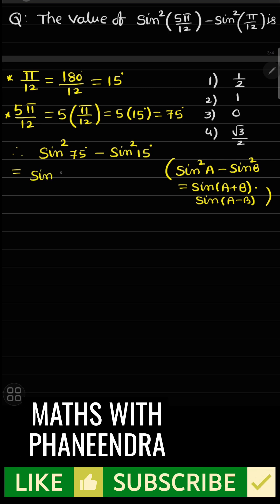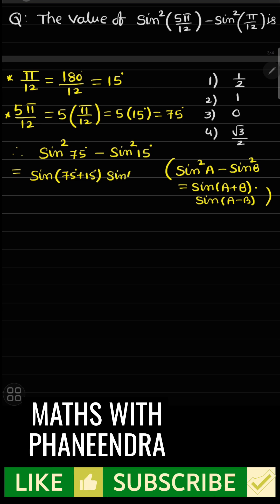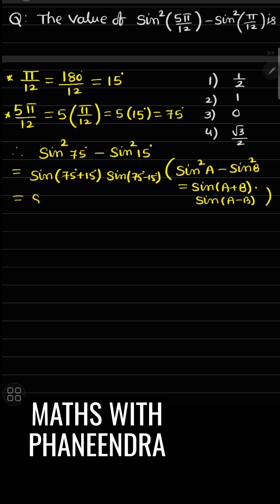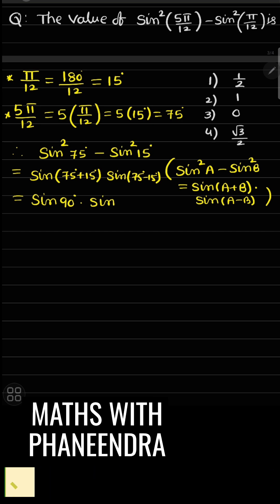So, sin(75+15) × sin(75-15), which is sin90° × sin60°.